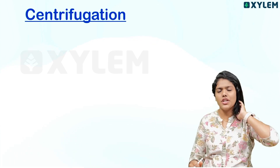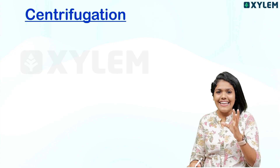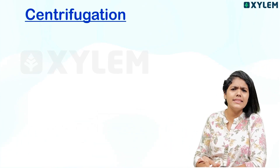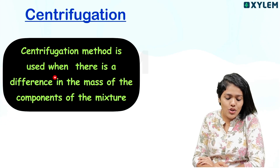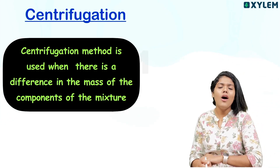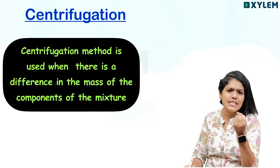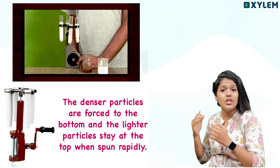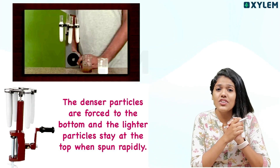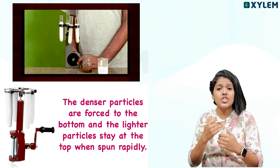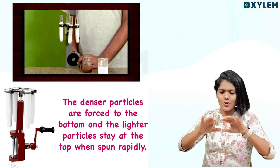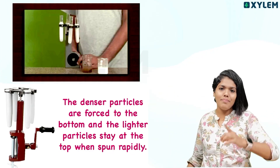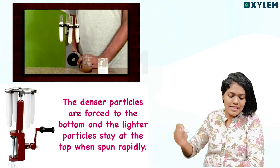The next method is centrifugation. Centrifugation is used in daily life in various ways. Centrifugation is used when there is a difference in the mass of the components of a mixture. It is a machine-based method.